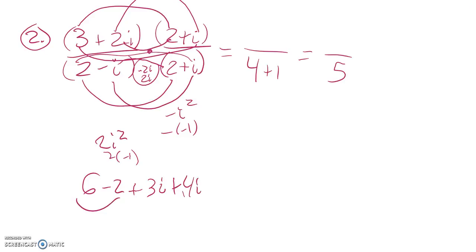So if you'll notice, 6 minus 2 is 4. 3i plus 4i is 7i. So I've got 4 plus 7i over 5. That's it. Thank you.